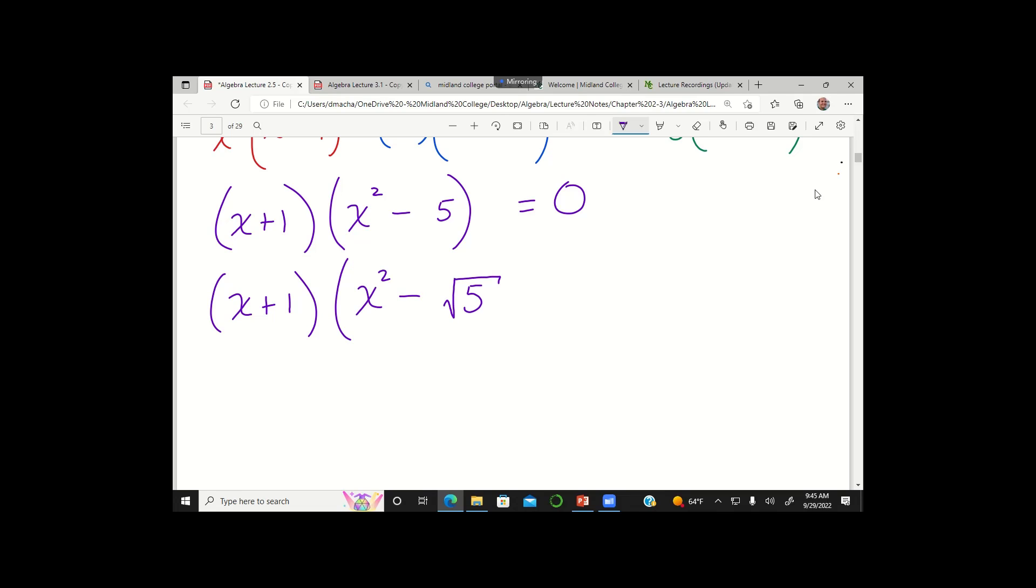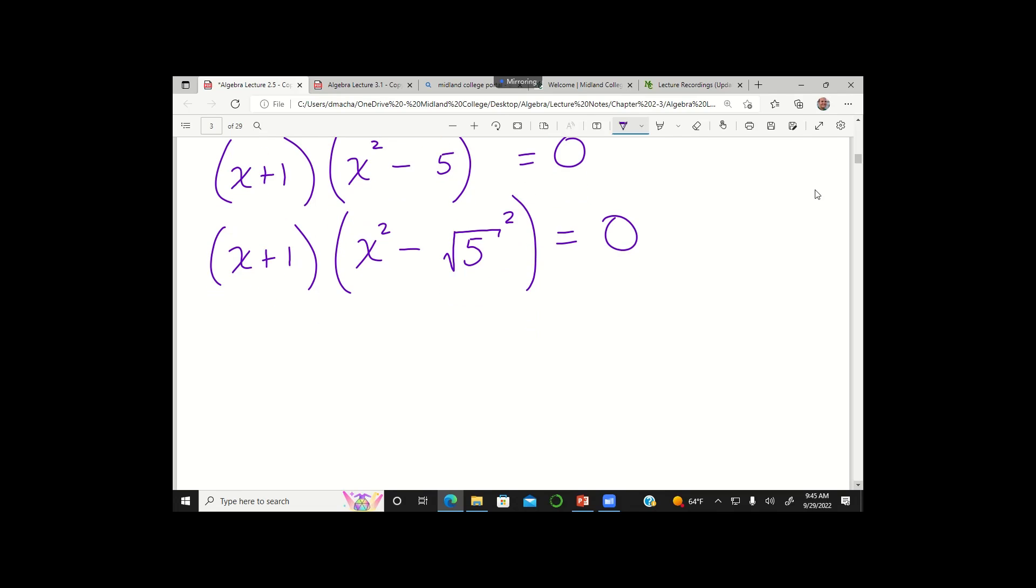The square root of 5 squared is 5, and so this is sort of like a difference of squares. And if you remember the pattern of how you like to factor difference of squares, I can factor that into x plus square root 5 times x minus square root 5, and that is equal to 0.